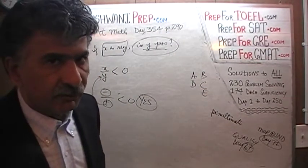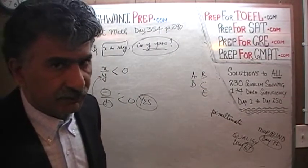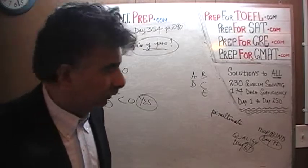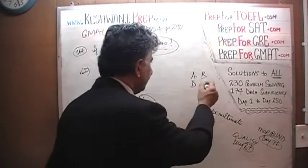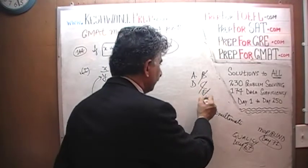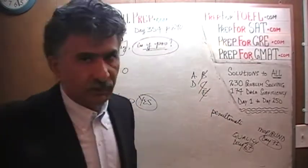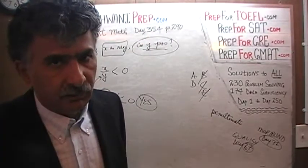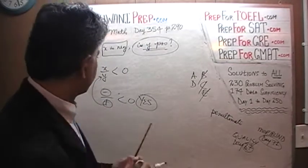Now that we have established that the first statement by itself is enough, we know the answer cannot be B, C, or E — it will have to be either A or D. Let's look at the second statement.